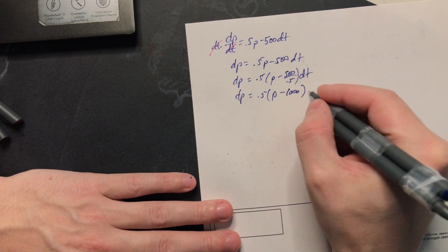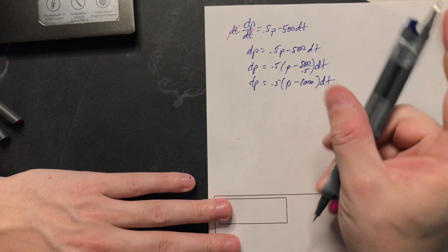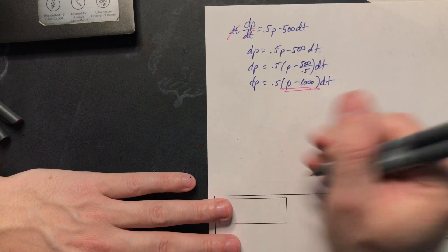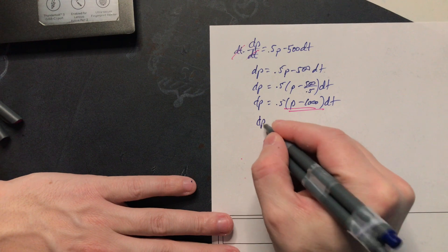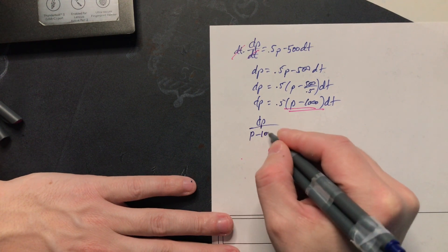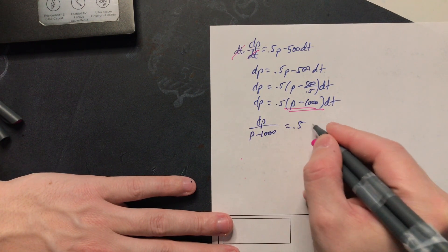Now take only this part here and then move it and place it under the dp. So when you do that it's going to be dp over the p minus the 1,000 is equal to 0.5 dt.